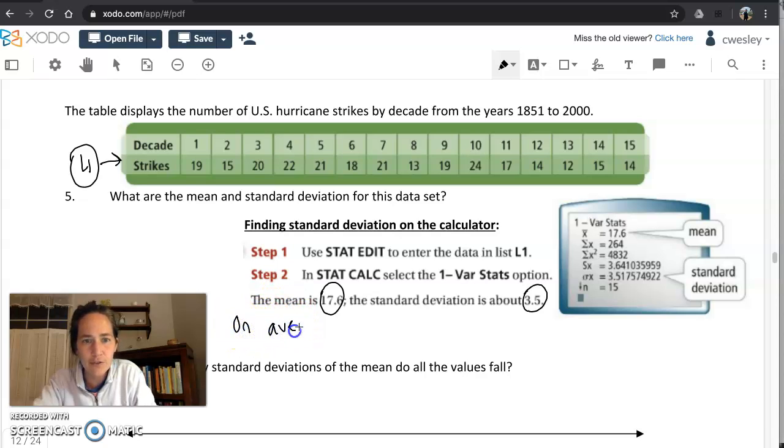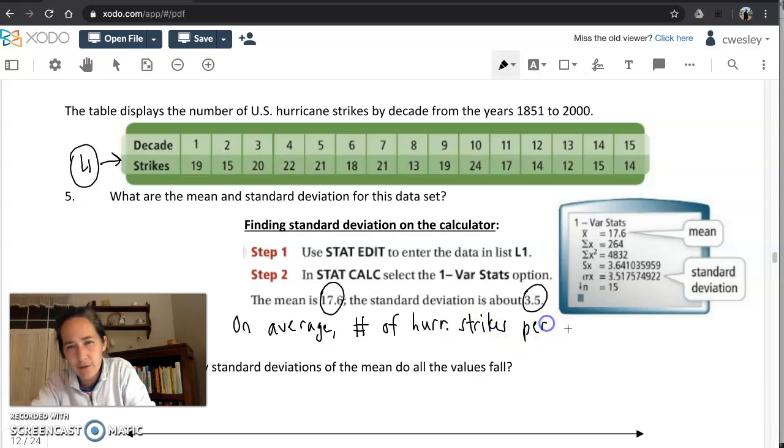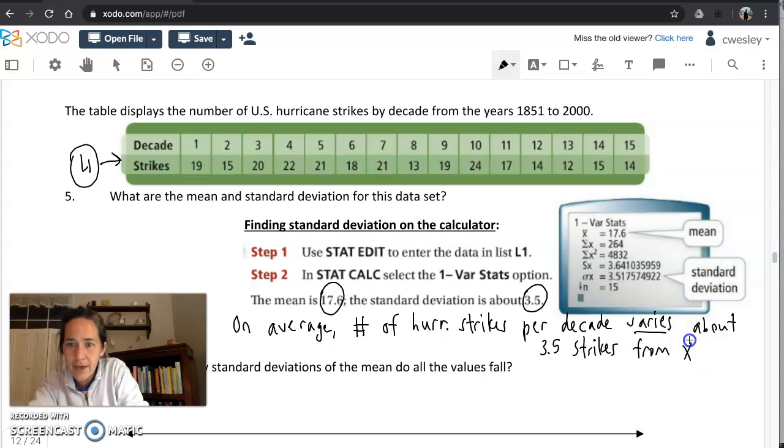On average, your number of hurricane strikes per decade, that's what the data was, varies, that's a key word because it's a measure of variation, about 3.5 hurricane strikes from the mean, the x bar, which is about 17.6. So you're about 3.5 above and below it on average for those data values.